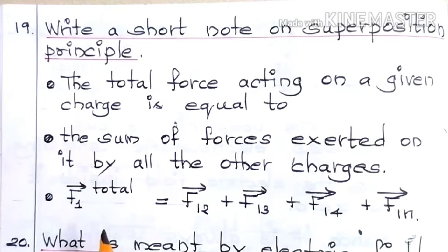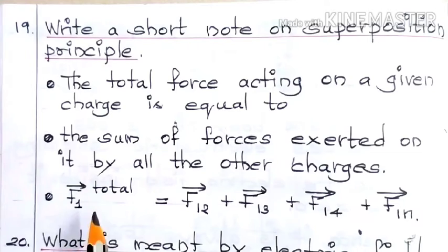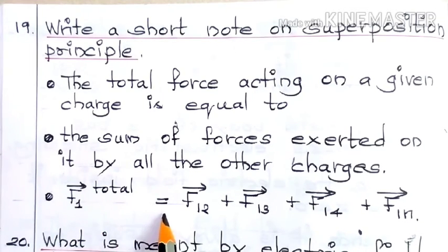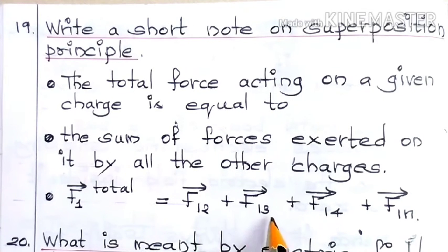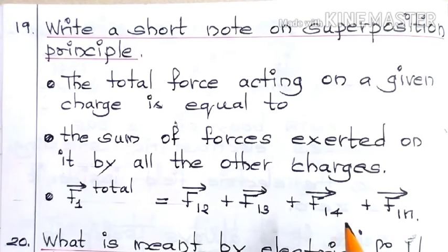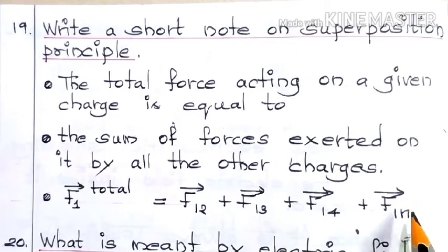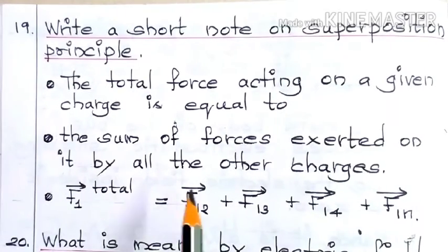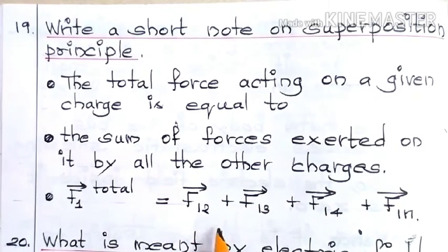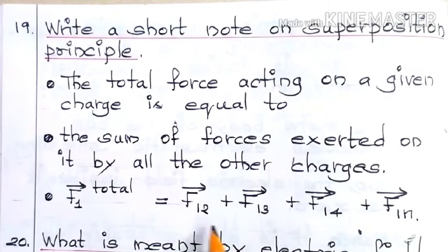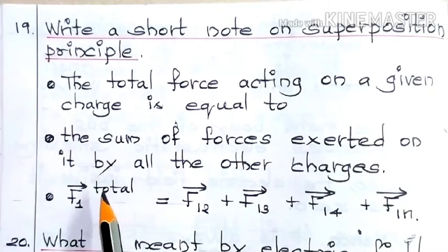For example, let us take a charge — charge 1. Charge number 1 experiences a total force which is equal to the force exerted by charge 2 plus the force exerted by charge 3 plus the force exerted by charge 4, and so on up to the nth charge. The sum total of all these forces equals the total force acting on the given charge.